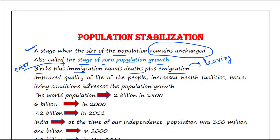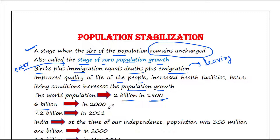In the last century, development in various fields significantly improved the quality of life of the people. Increased health facilities along with better living conditions increased the population growth. The world population which was around 2 billion in 1900 rocketed to about 6 billion in 2000 and 7.2 billion in 2011.